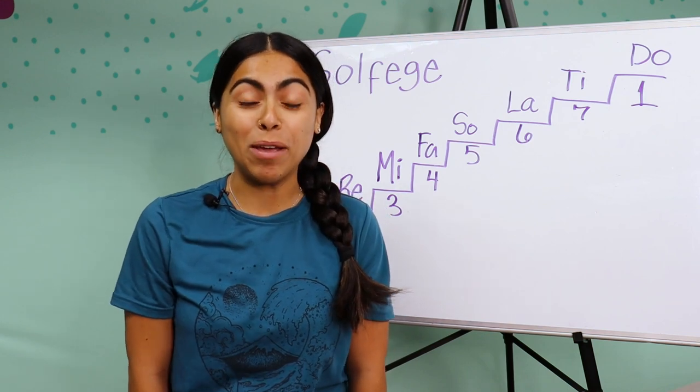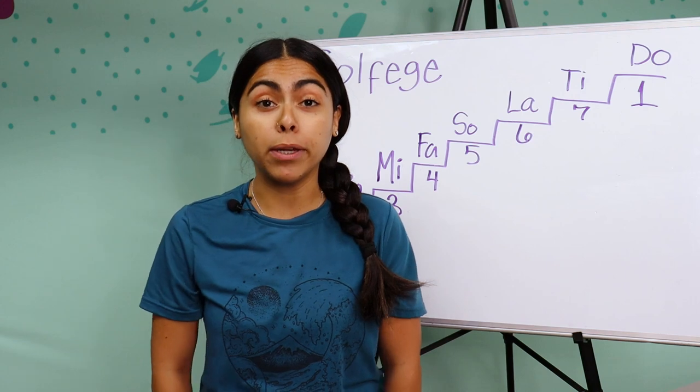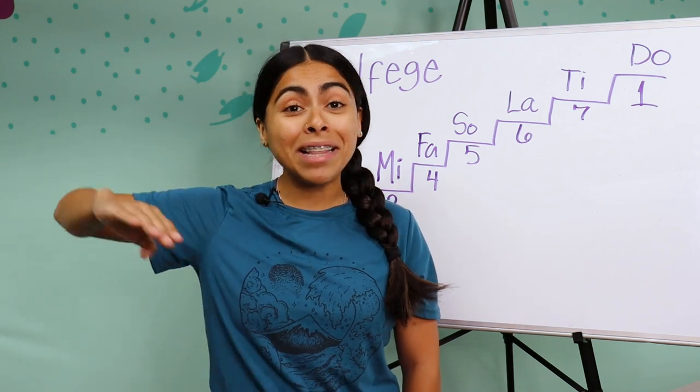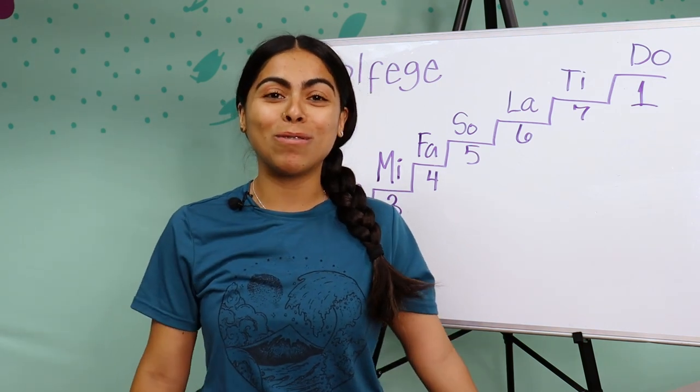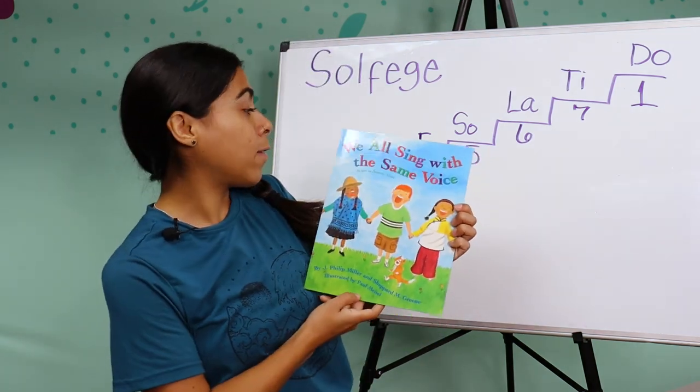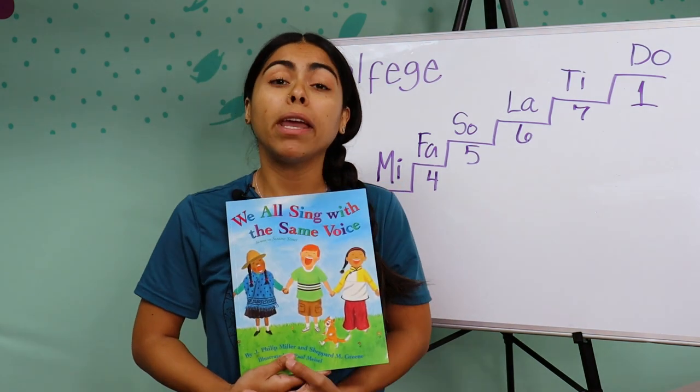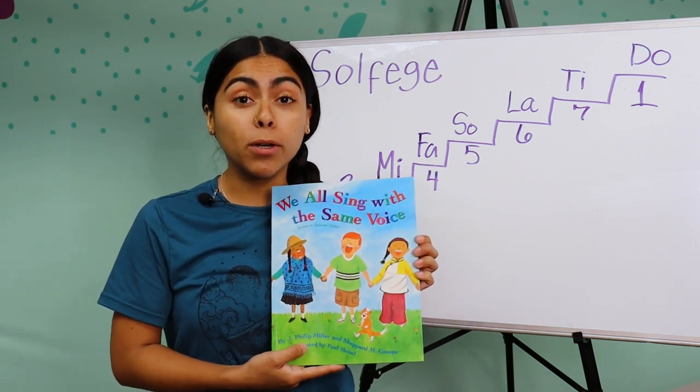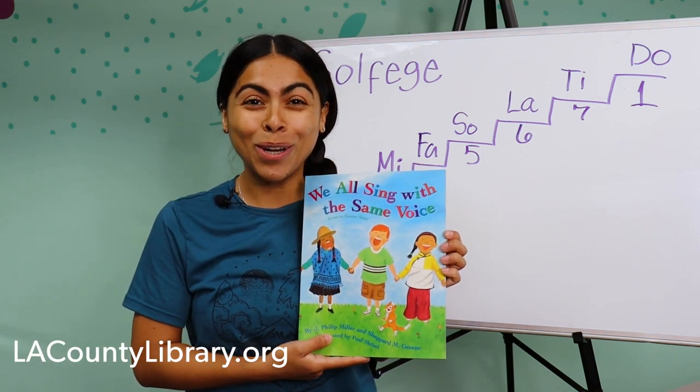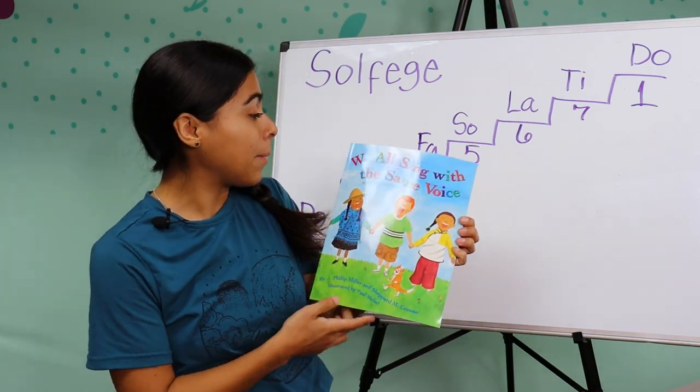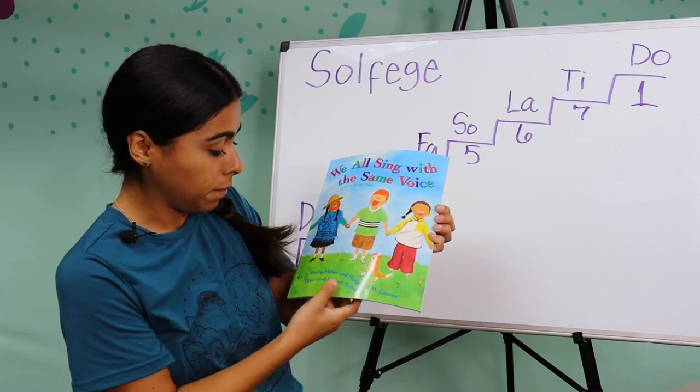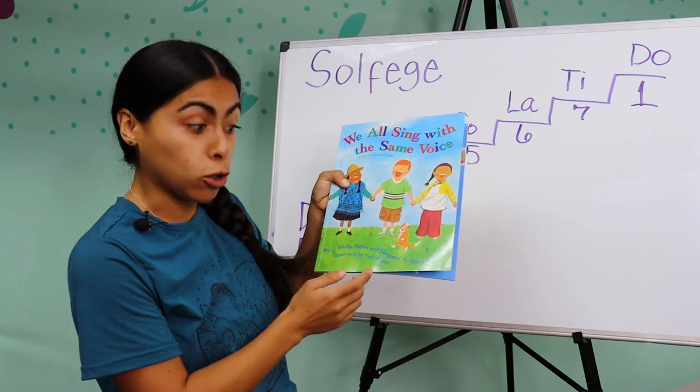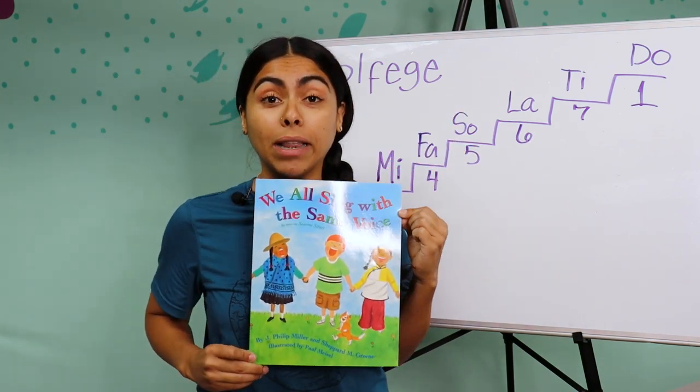Well, singing was so much fun with all of you today. We learned about solfege and all the little short sounds that we use. Do, re, mi, fa, sol, la, ti, do. Can you all do that with me? Do, re, mi, fa, sol, la, ti, do. Beautiful. So we all love singing. And I want to show you a very special book. This book is called We All Sing With The Same Voice. And it's a book about how we all love singing. It doesn't matter where you're from or what your background is. We all love singing. And you can find this book at the LA County Library catalog at lacountylibrary.org. It's a wonderful book. The title is We All Sing With The Same Voice. It's by J. Philip Miller and Shepard M. Green, and it's illustrated by Paul Meisel. That means the pictures are drawn by Paul Meisel. So this is a wonderful book that you can get at the LA County Library. So check it out.